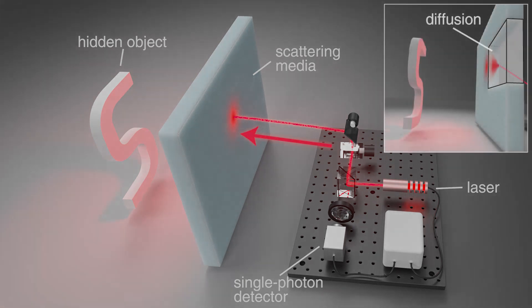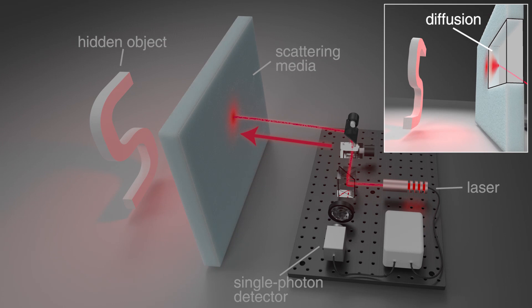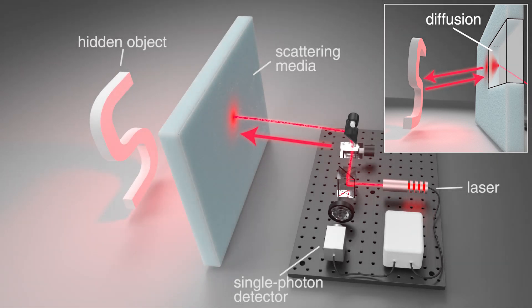The pulse diffuses through the scattering media, propagates through free space to the surface of the hidden object, and is back reflected, diffusing one more time back through the scattering media.